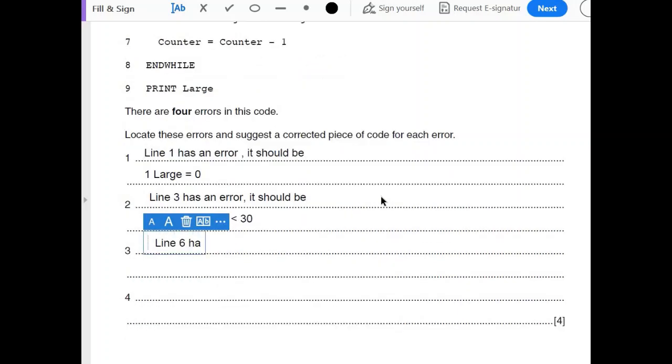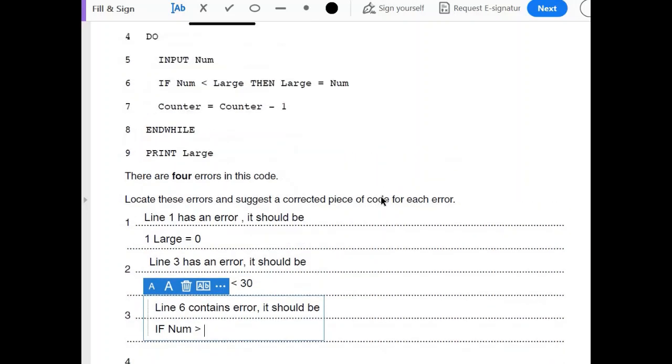Like we discussed, often IF conditions have the wrong logical or comparative operators as well. So line 6 has an error, or line 6 contains error number 3. It should be what? It should be IF num is greater than large, THEN large equals num, or num, what the examiner has provided.